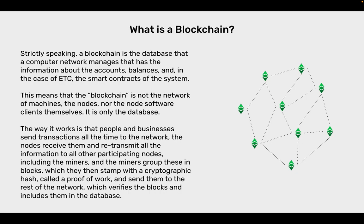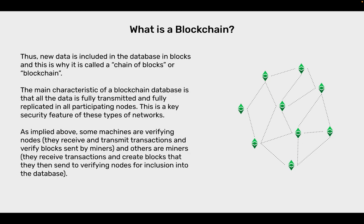The way it works is that people and businesses send transactions all the time to the network, the nodes receive them and retransmit all the information to all other participating nodes, including the miners, and the miners group these in blocks, which they then stamp with a cryptographic hash called a proof-of-work, and then send them to the rest of the network, which verifies the blocks and includes them in the database. Thus, new data is included in the database in blocks, and this is why it is called a chain of blocks or blockchain. The main characteristic of a blockchain database is that all the data is fully transmitted and fully replicated in all participating nodes. This is a key security feature of these types of networks.